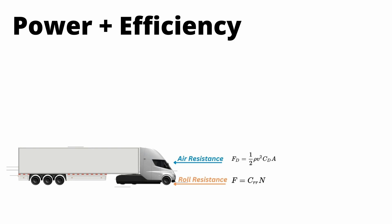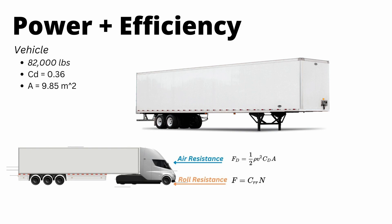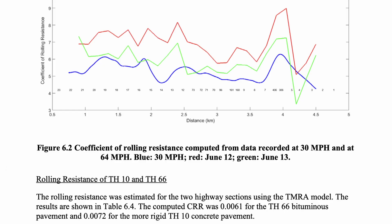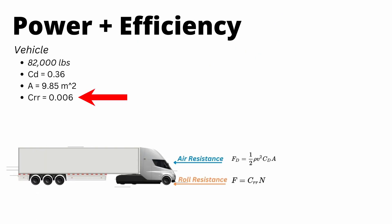So for the Tesla semi, we know it weighs 82,000 pounds at full load. It has a coefficient of drag of 0.36. We don't know the frontal area, but I'm going to estimate it at 9.85 square meters based on the dimensions of a trailer. Coefficient of rolling resistance is extremely hard to get an accurate value, but I've looked at various research papers, and the values vary between 0.005 and 0.008. So we're going to use 0.006 as a nice middle ground.